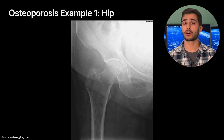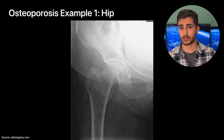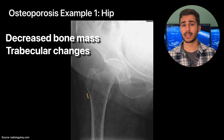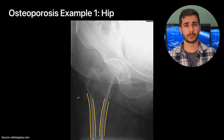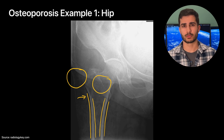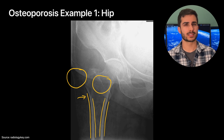Here's an example of what osteoporosis looks like, especially when compared to a normal hip x-ray. Thinking about the radiographic signs — decreased bone mass presenting as cortical thinning and trabecular changes — you can see both of those here. The cortex is a bit thinner, especially towards the proximal hip area, but really it's just the lack of density in the bone that gives it away. The bone appears more grey than white, almost blending in with the soft tissue in the background.